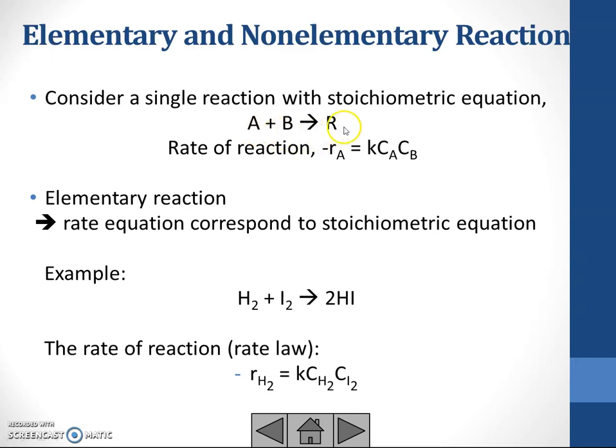For this example, the stoichiometry for A and B is 1: 1A plus 1B producing 1R. We have the rate law or rate equation for this reaction is negative RA equals to KCA and CB.